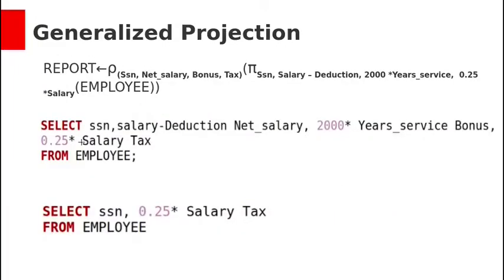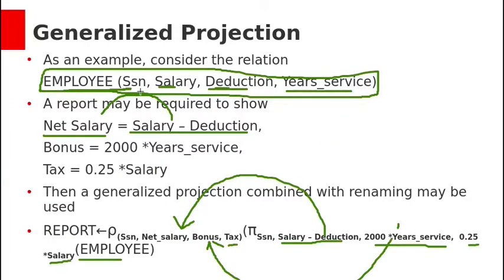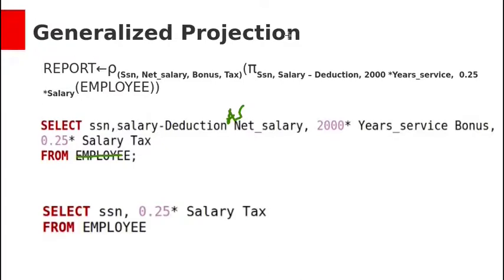The equivalent SQL query can be written as: SELECT SSN, salary minus deductions AS net_salary, 2000 into years of service AS bonus, 0.25 into salary AS tax FROM employee table. This employee table is not from our company schema — we are assuming it here. If you apply generalized projection on our company employee schema, only salary is available, so we can calculate only tax.